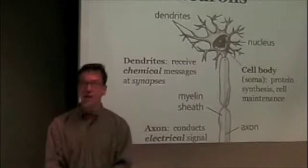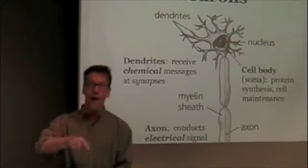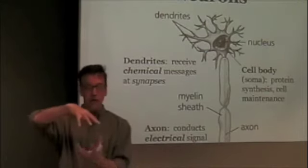When you think of a cell, neurons are cells, but if you think of a cell, you think of something rounded, right? You think of something oval, spherical.